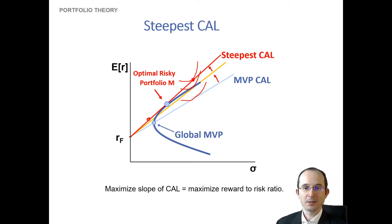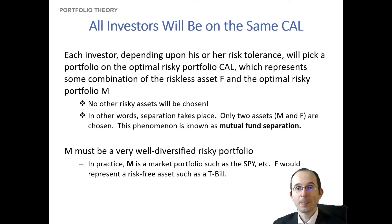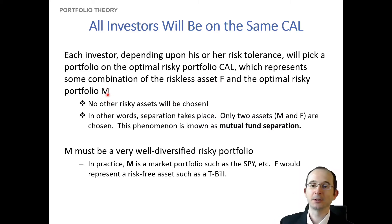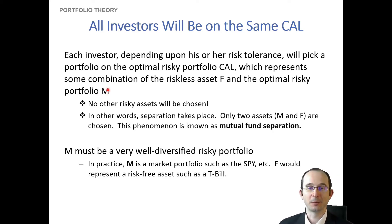To maximize the slope of the capital allocation line is essentially to maximize the reward-to-risk ratio — the Sharpe ratio — and therefore to maximize utility. This suggests that all investors will actually be on the same capital allocation line; it just depends on where they are relative to their investment in the risk-free asset and the risky portfolio M, which we conjecture will be the market portfolio with the highest Sharpe ratio, having diversified away all idiosyncratic risk.